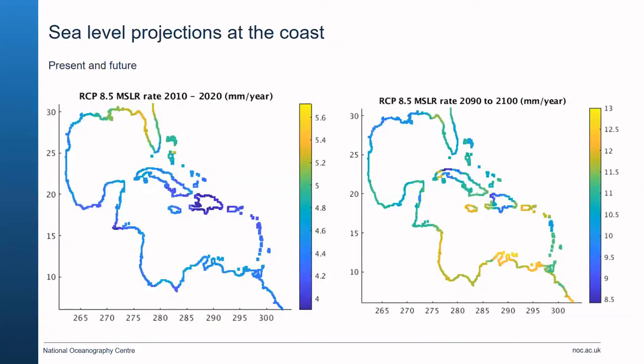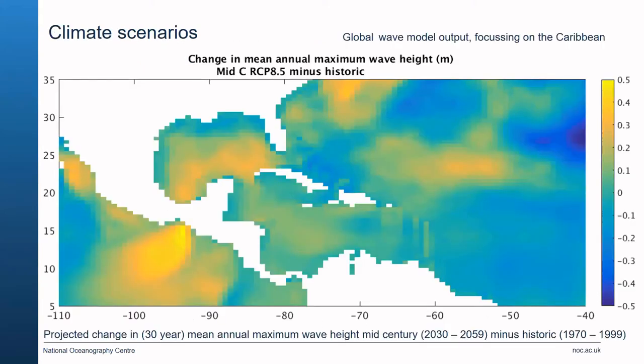To build a hazard exposure map we need to understand sea level projections from model results. These are the present and future sea level projections around Caribbean shorelines — present-day rates between 2010 and 2020 in millimetres per year, and future rise from 2019 to 2100. We can see that present-day rates have increased into the future because the colour bars have become much larger. Models also look at climate scenarios and changing wave conditions.